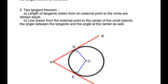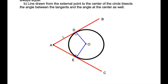The second theorem is the two-tangent theorem, which states that the lengths of tangents drawn from an external point to a circle are always equal. So the length AD is equal to the length AE, which are the two tangents drawn to the circle, and similarly the length AB is equal to the length AC.